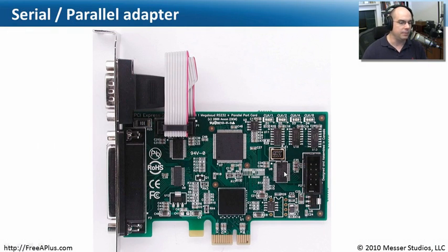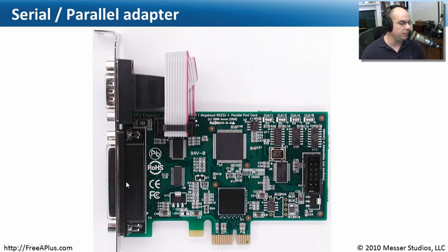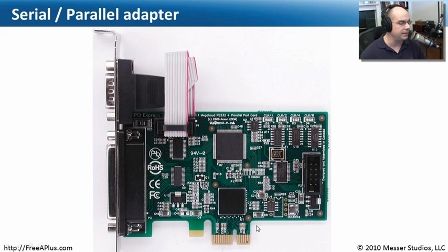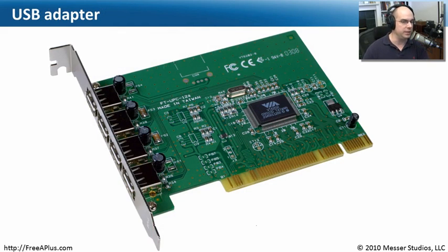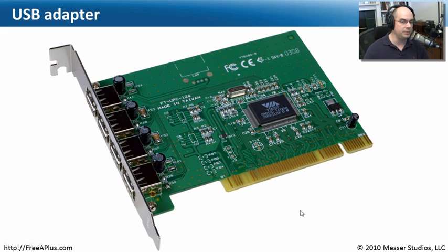There are other I/O options as well. Maybe you bought a new computer without a serial port or you'd like to add another parallel port. You could buy a card like this that has both a serial port and a parallel port, using a one-lane PCI Express interface. Or maybe you need more USB ports — here's a PCI card that adds four more USB ports right off the motherboard, giving you plenty of additional USB connections inside your computer.